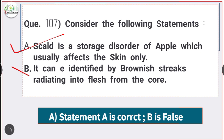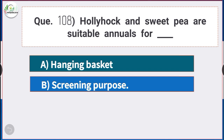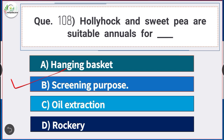Question number 108: Hollyhock and sweet pea are suitable annuals for — answer option B — screening purpose. Hollyhock and sweet pea are suitable annuals for screening purpose.